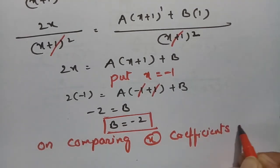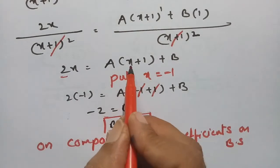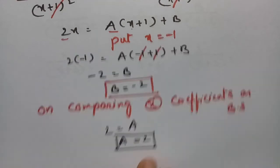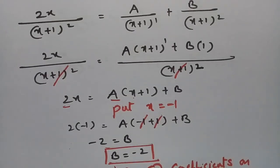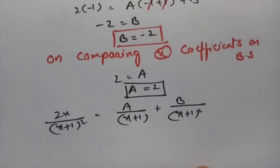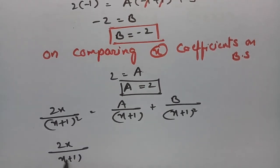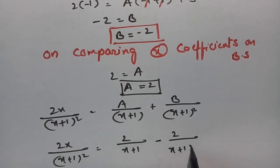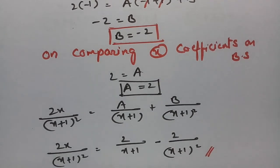Comparing x coefficients on both sides: the coefficient of x on the left is 2, and on the right it is A, therefore A = 2. Substituting: 2x/(x+1)² = 2/(x+1) + (-2)/(x+1)². This is how we solve — practice makes it simple. I'll be uploading more videos on partial fractions, so please practice all of them. Thank you so much.